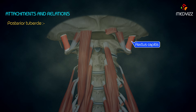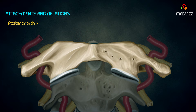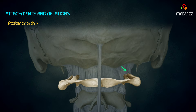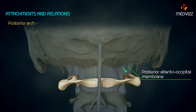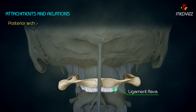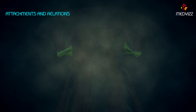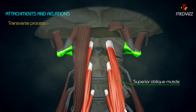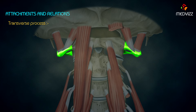The posterior tubercle provides attachment to the ligamentum nuchae in the median plane and gives origin to rectus capitis posterior minor on each side. The groove on the upper surface of the posterior arch is occupied by the vertebral artery and the first cervical nerve. The upper border gives attachment to the posterior atlanto-occipital membrane, and the lower surface gives attachment to the highest pair of ligamenta flava.